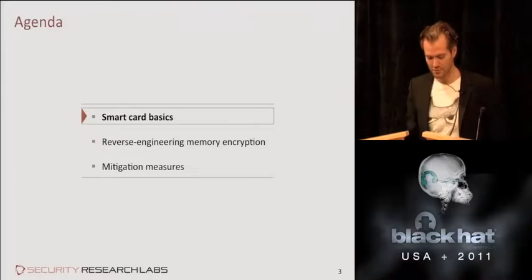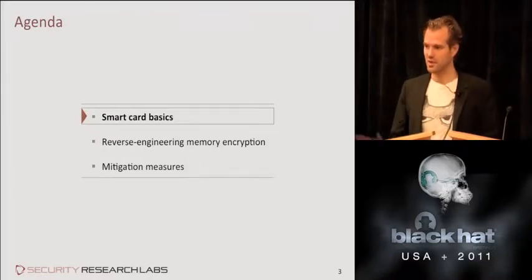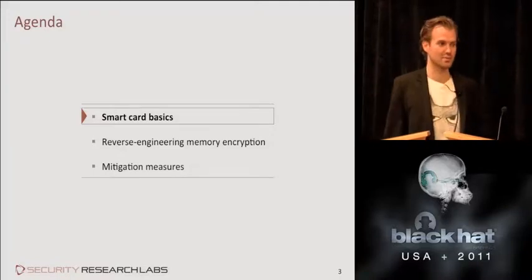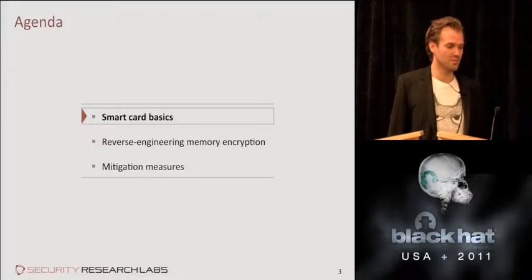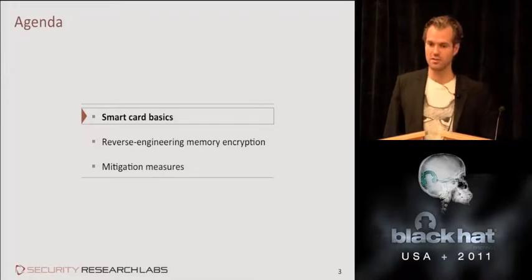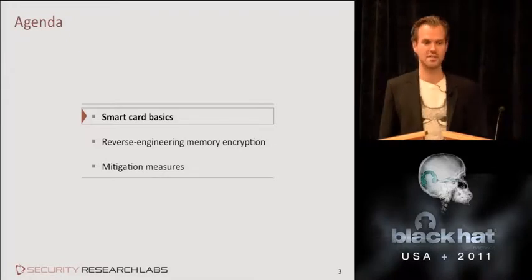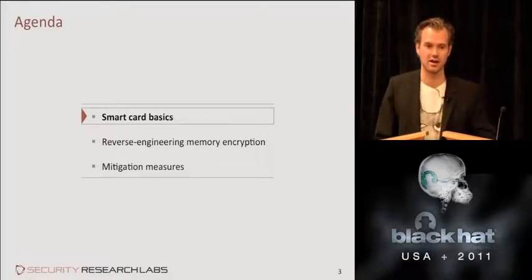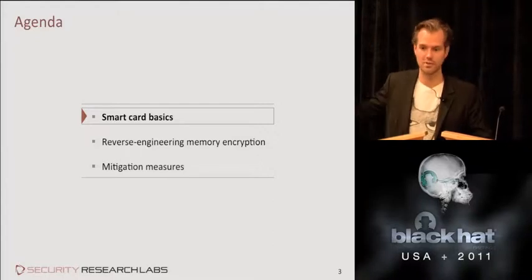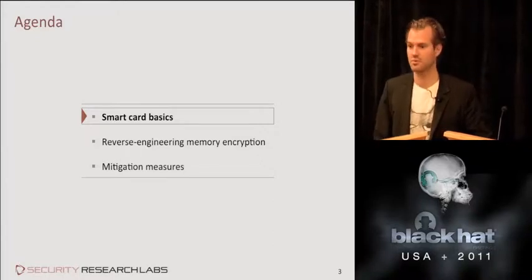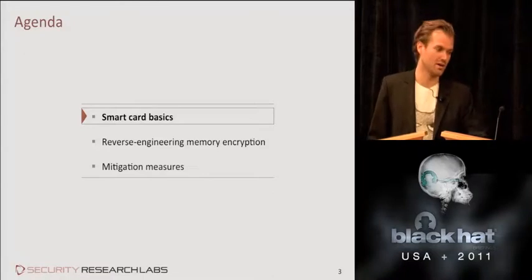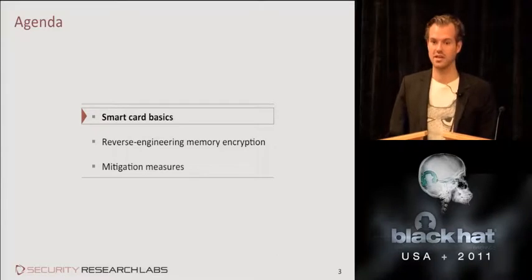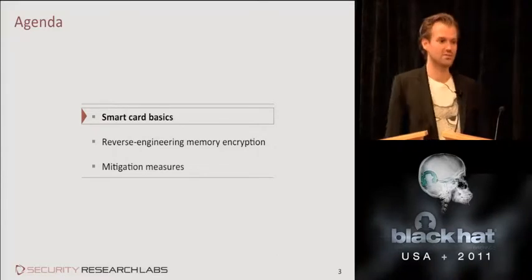We'll start off with some background on smart card architectures. Some of you may never have seen or gotten a smart card chip explained. We'll then show how we, from one of these chips, reverse engineer the crucial function that now allows this extraction of code pretty easily. This one just stands as an example for a problem that will be found in every smart card chip out there pretty much. And we'll eventually cover some mitigation measures smart card manufacturers could do to prevent this.